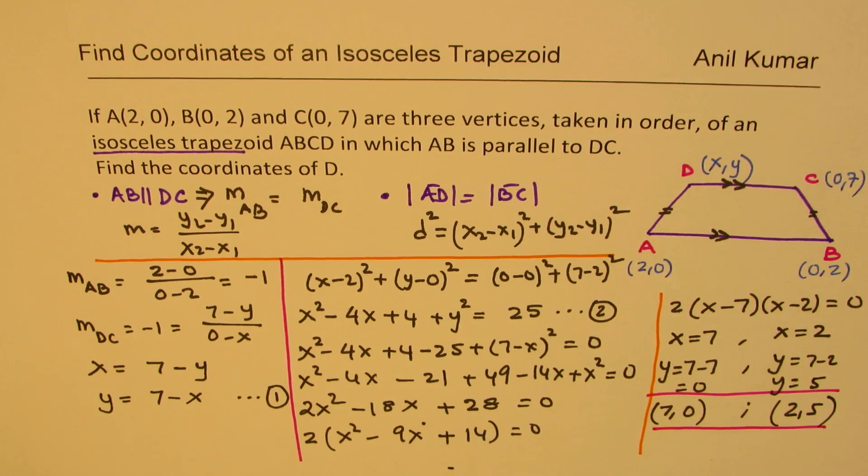The idea here is we need to find two values X and Y. That means we should have two equations to solve. We got one equation using the slope, the other one using distance. Since it is a quadratic equation, we get two possible solutions. I hope that makes sense. Feel free to write your comment, share your views and if you like and subscribe to my videos, that'd be great. Thanks for watching and all the best.